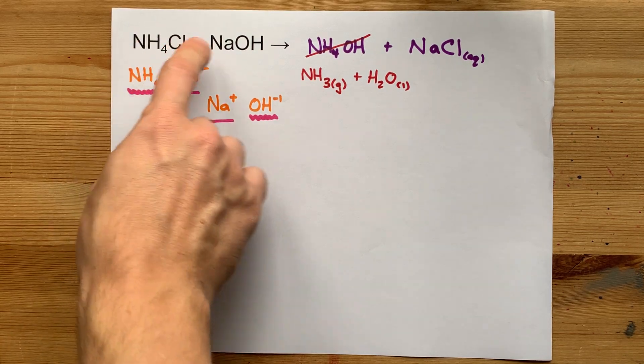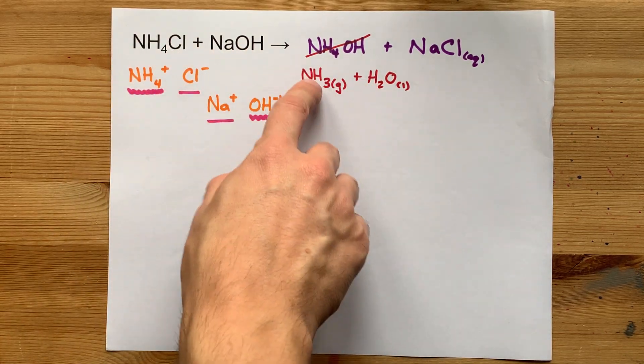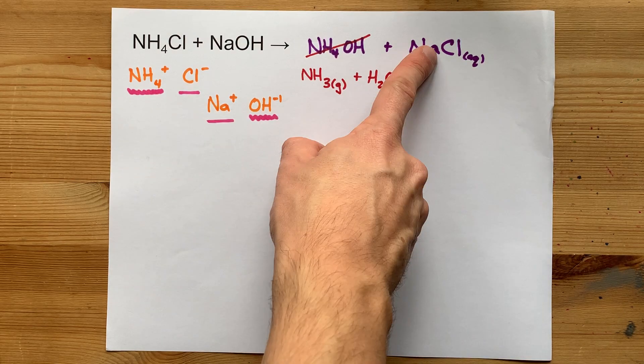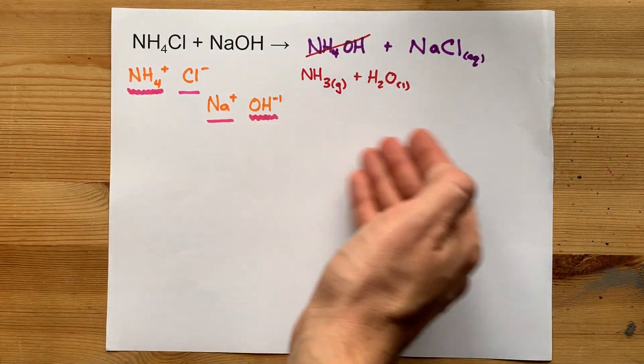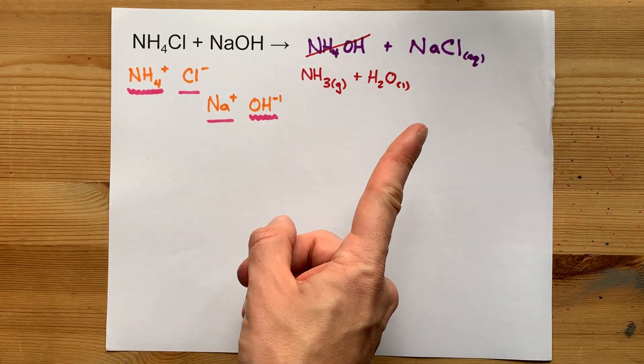The reaction of ammonium chloride and sodium hydroxide gives you ammonia and water and sodium chloride. Best of luck. Double displacement.